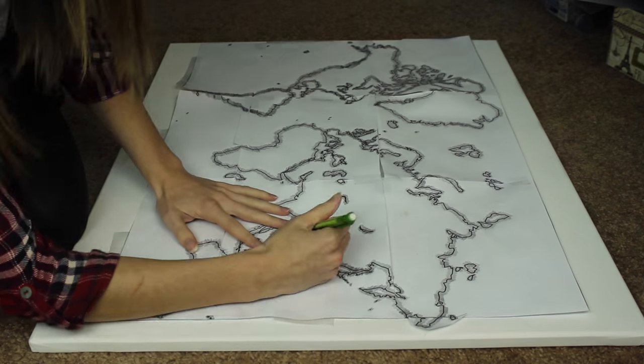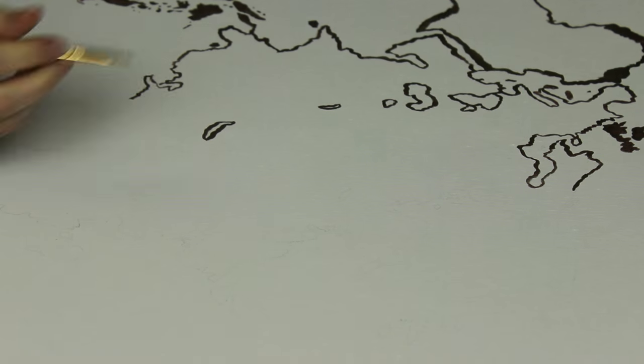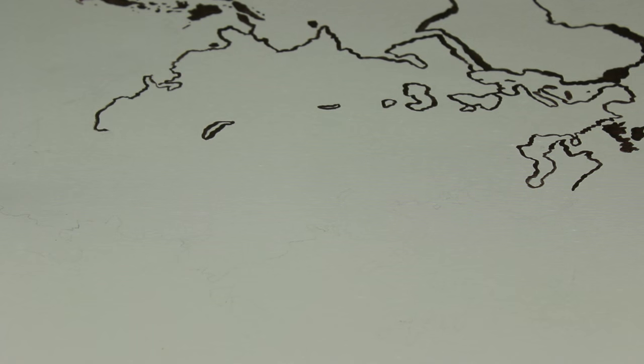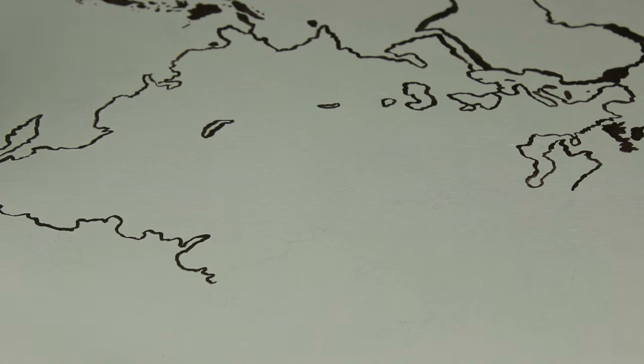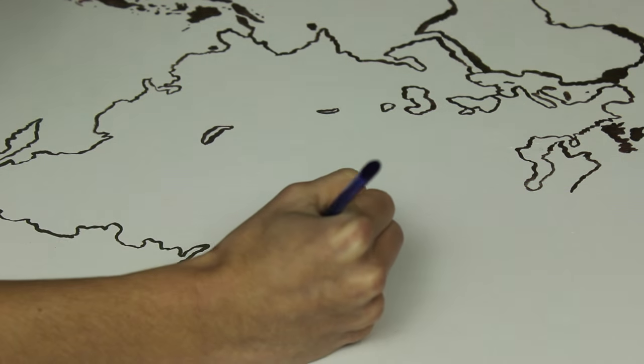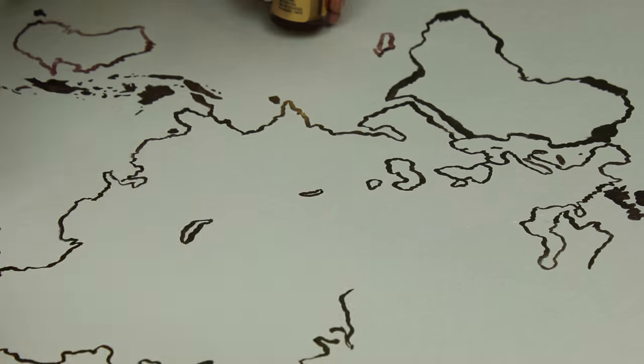Next I'm making a world map. So first I just traced it on the back and then shaded the front to transfer it onto the canvas. And I didn't really show that because it took forever. Once it was transferred onto the canvas, I took some gold leaf paint instead of using actual gold leaf and outlined the continents on the canvas so that way it would be easier for me to fill it in in a few minutes.